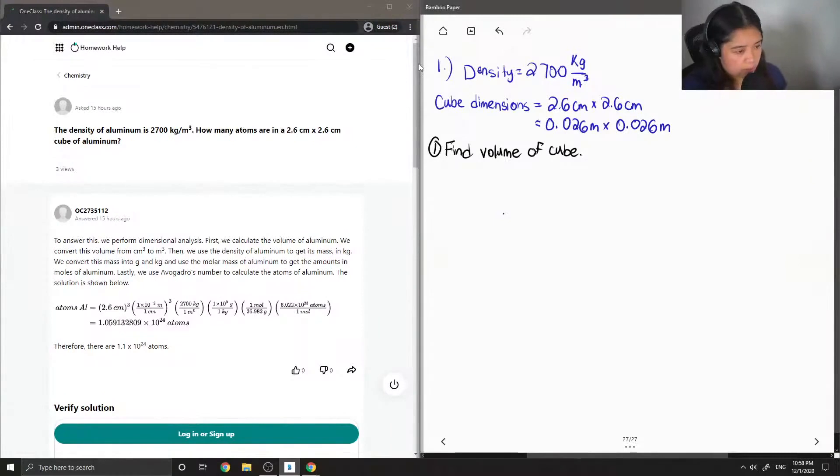This is just simple math. Finding the volume of a cube is just length x width x height. So since we know the dimensions of the cube, which is 0.026 meters x 0.026 meters x 0.026 meters, the volume would just be 0.026 meters cubed.